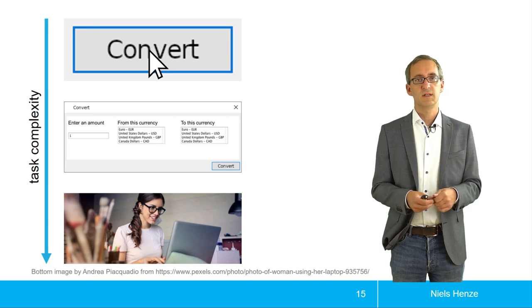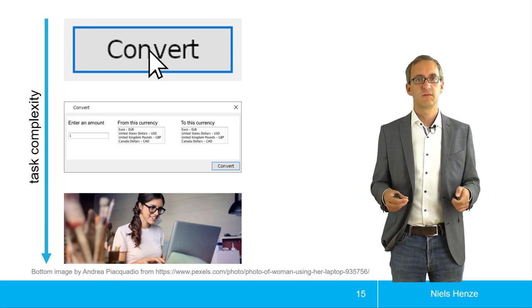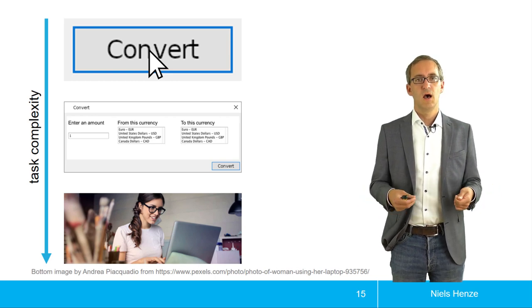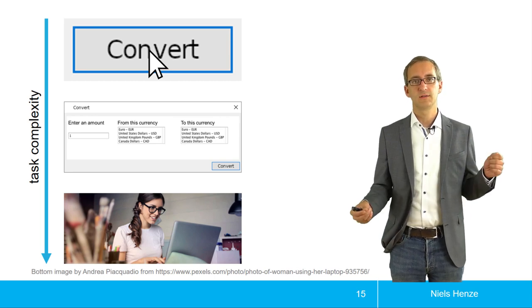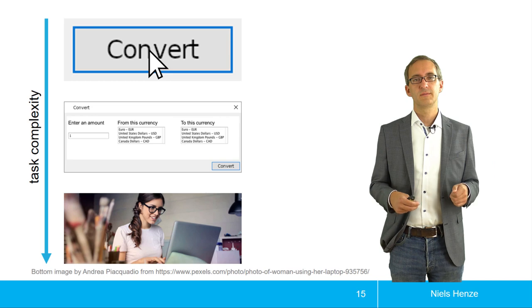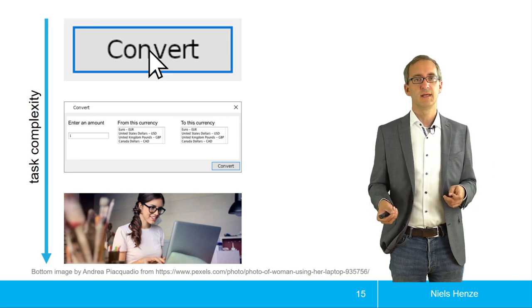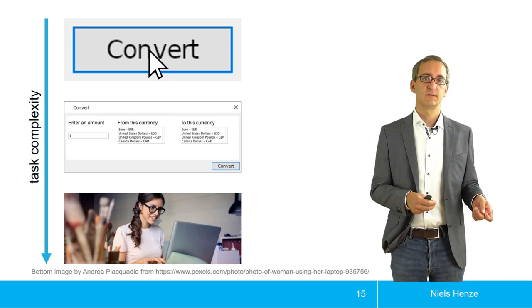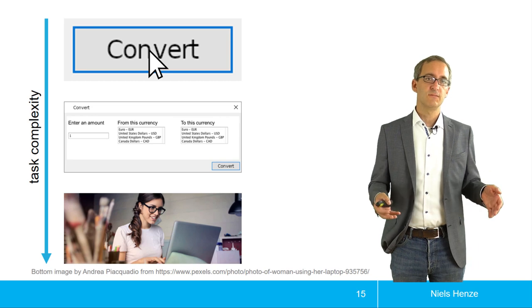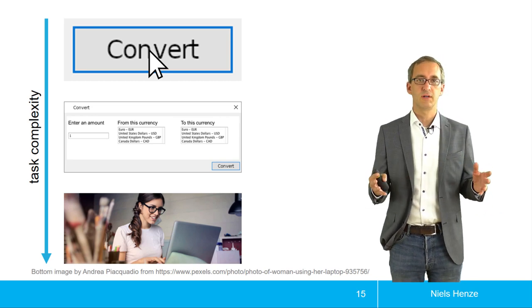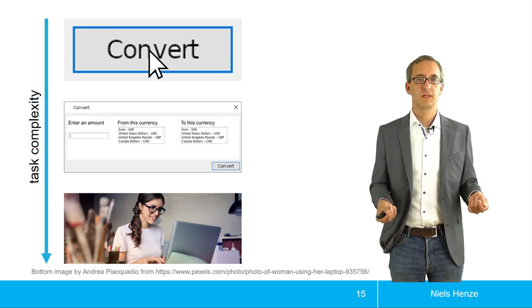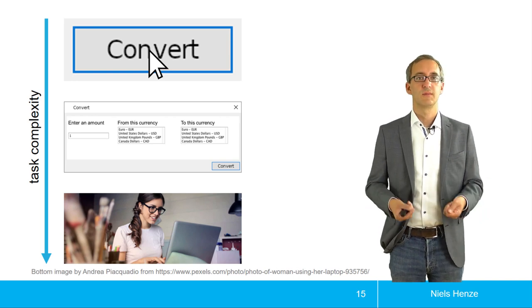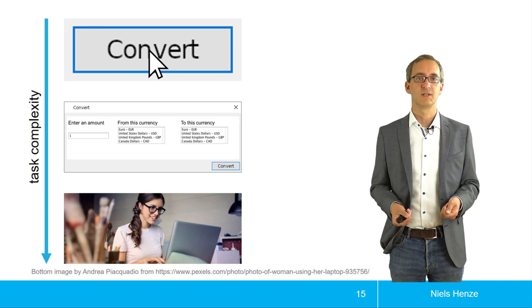And again, we have models for that that describe how long does a person need to fill this form for a specific task. And we can even go more abstract. We can try to model how people interact with entire systems. And if you go along this path, models become more and more complex and often less and less precise. But even if you have these very broad tasks, models can still be helpful in order to make predictions about our system and the user and how they interact with each other.